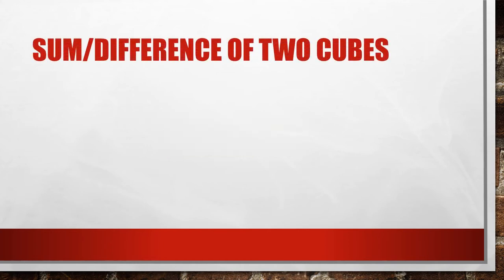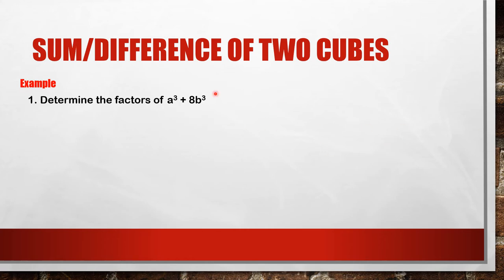Now let's proceed to the other case: the sum and difference of two cubes. Starting with the sum of two cubes, we have a cubed plus 8b cubed. We take the cube root of a cubed, which is a, and the cube root of 8b cubed — the cube root of 8 is 2 and the cube root of b cubed is b — giving us the binomial (a plus 2b).